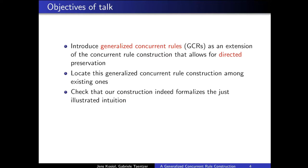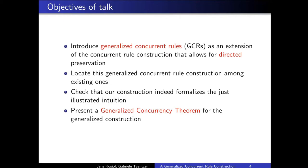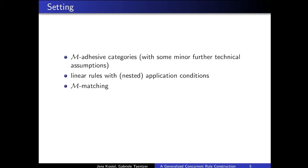In this talk, we want to introduce generalized concurrent rules as an extension of the concurrent rule construction which allows for directed preservation. We want to locate this generalized concurrent rule construction among already existing kinds of rule composition. We want to check that our construction formalizes the intuition just illustrated and present a generalized concurrency theorem. Our setting is M-adhesive categories with M-effective unions and factorizations of pairs of morphisms. Our input is linear rules with arbitrarily nested application conditions. You can just think of graphs and injective homomorphisms for the rest of the talk.